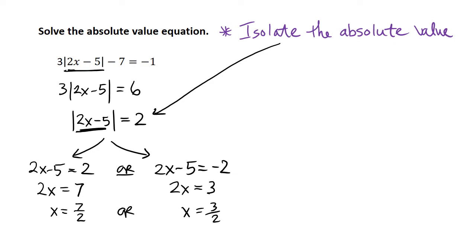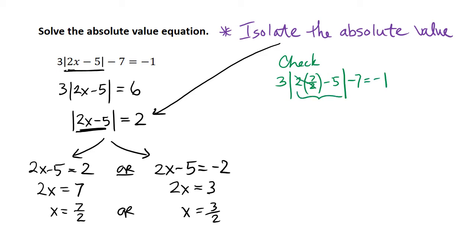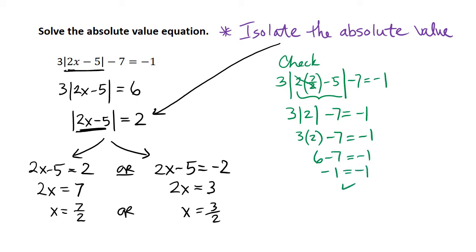If we've done our work right, we should get a true statement. Let's check x equals 7 halves. We compute 3 times the absolute value of 2 times 7 halves minus 5, close absolute value, minus 7, equals negative 1. The 2s cancel, giving us the absolute value of 7 minus 5, which is the absolute value of 2, which is 2. Then 3 times 2 is 6, and 6 minus 7 is negative 1. So we get a true statement.